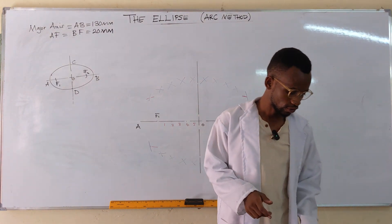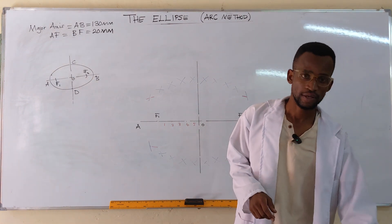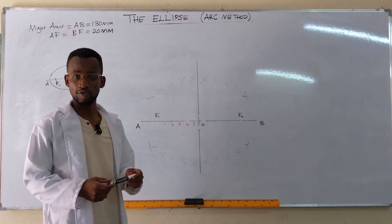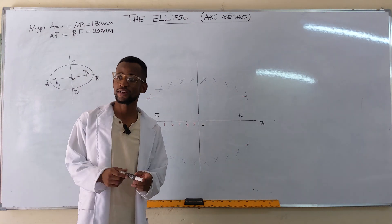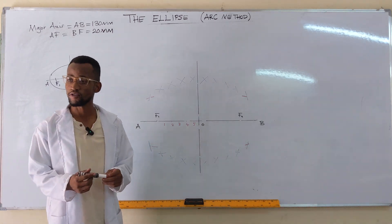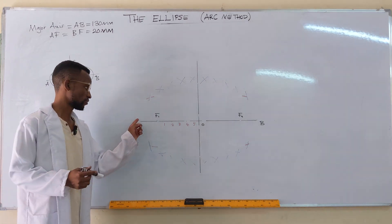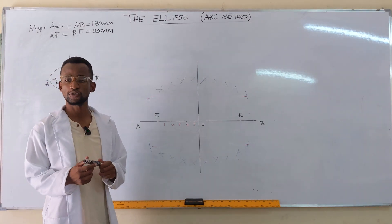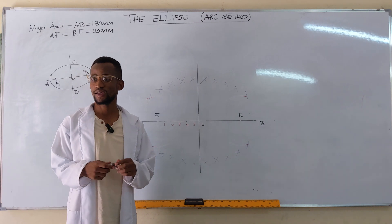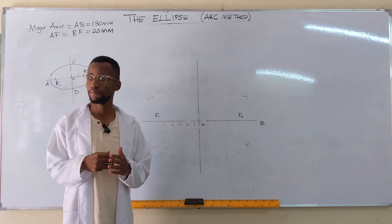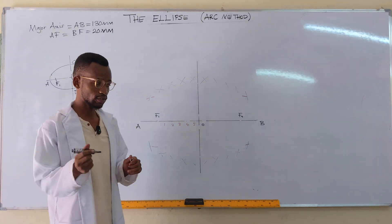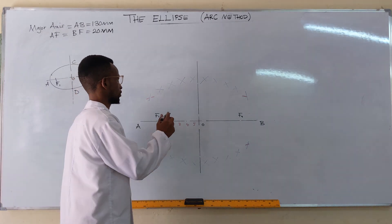Now draw the ellipse by connecting all the intersection points. Always remember that an ellipse has no corners — it must be a smooth curved path when connecting these points.